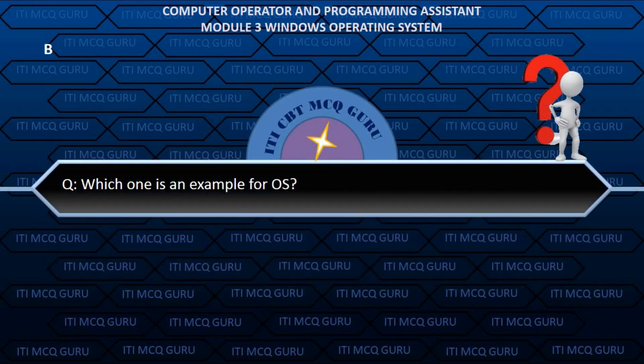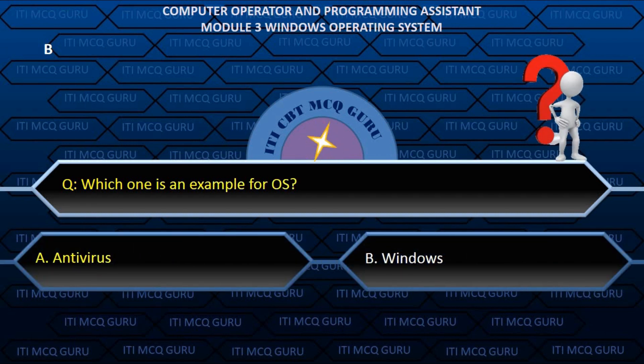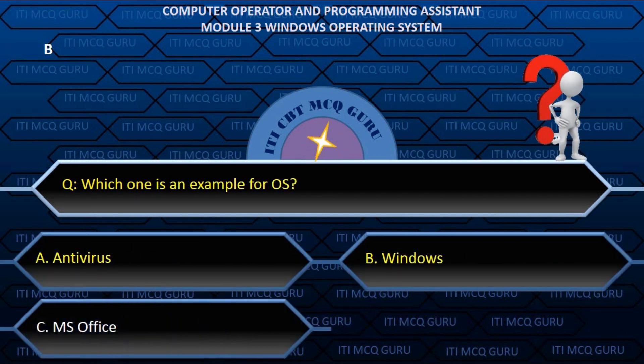Which one is an example of an OS? B. Windows.